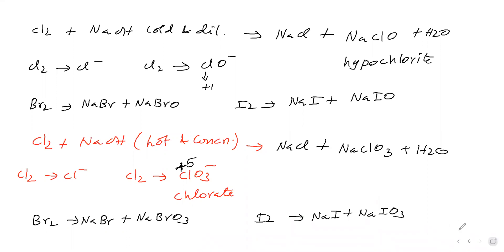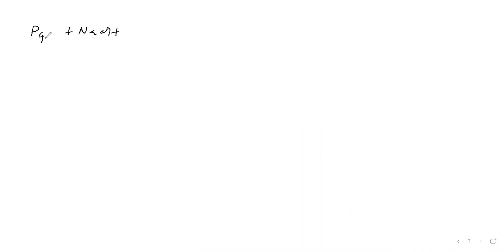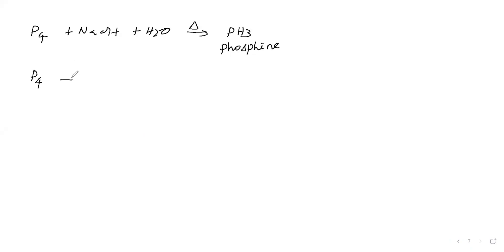Next, white phosphorus reacting with sodium hydroxide: white phosphorus is added to boiling sodium hydroxide solution. Phosphine gas (PH₃) is produced. Phosphorus (0) converts to −3 (reduction, forming PH₃) and also to +1 (oxidation, forming an oxo anion). Since phosphorus undergoes both oxidation and reduction, this is a disproportionation reaction.